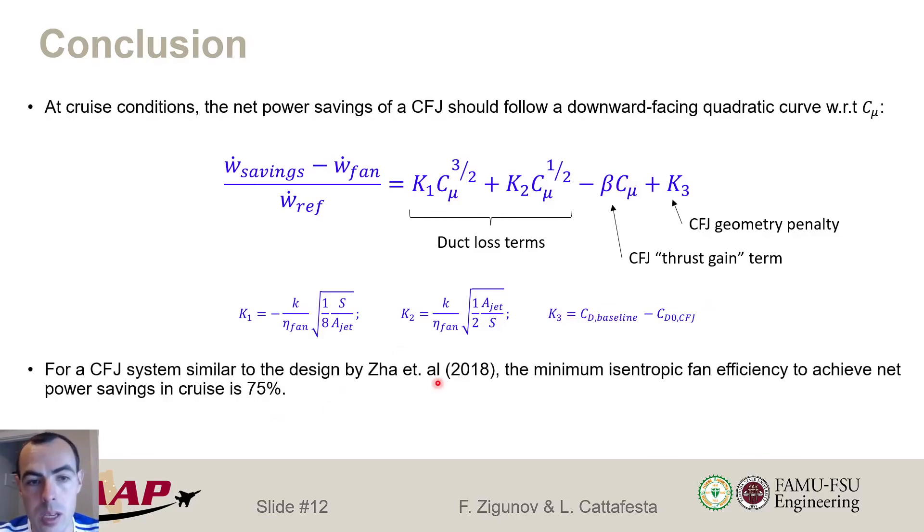In the design that we looked at, which is based on the design by Zha et al 2018, we get the minimum efficiency of 75% to get net power savings. But as we discussed before, we can tune these constants and maybe focus our efforts into lowering this threshold efficiency for a more viable design in engineering of the system. All right, so that's all I have. So thank you very much for your time. And if you want to see more details, have a look at our paper. So thank you very much and have a great day.